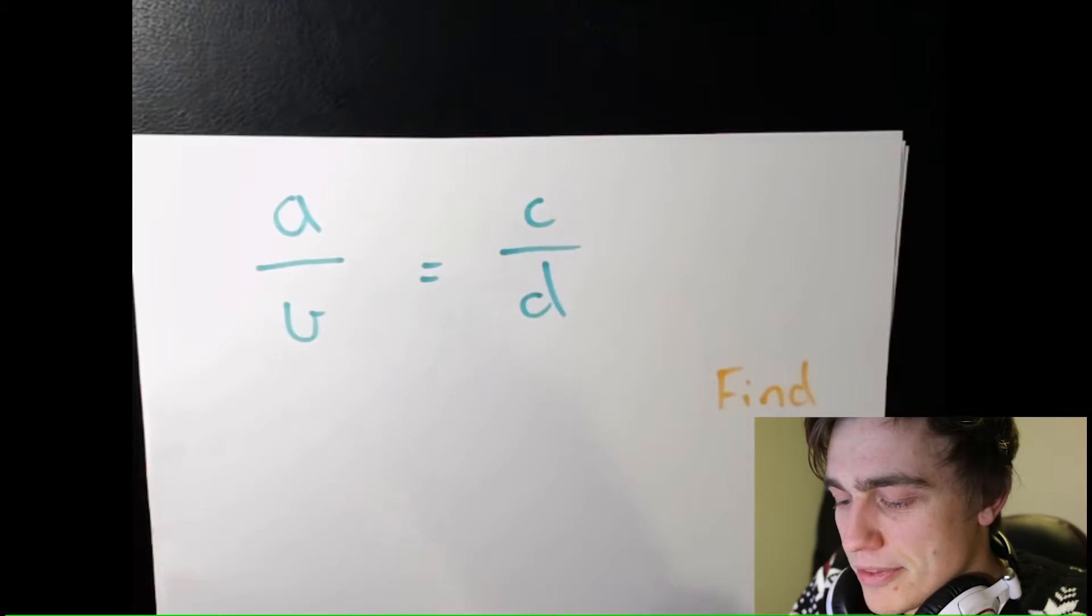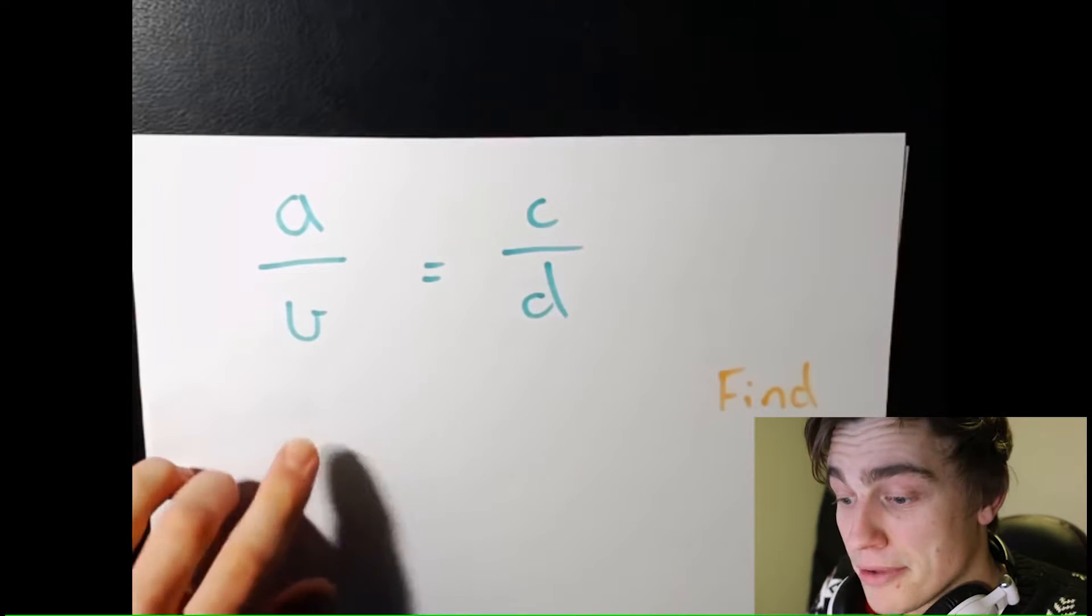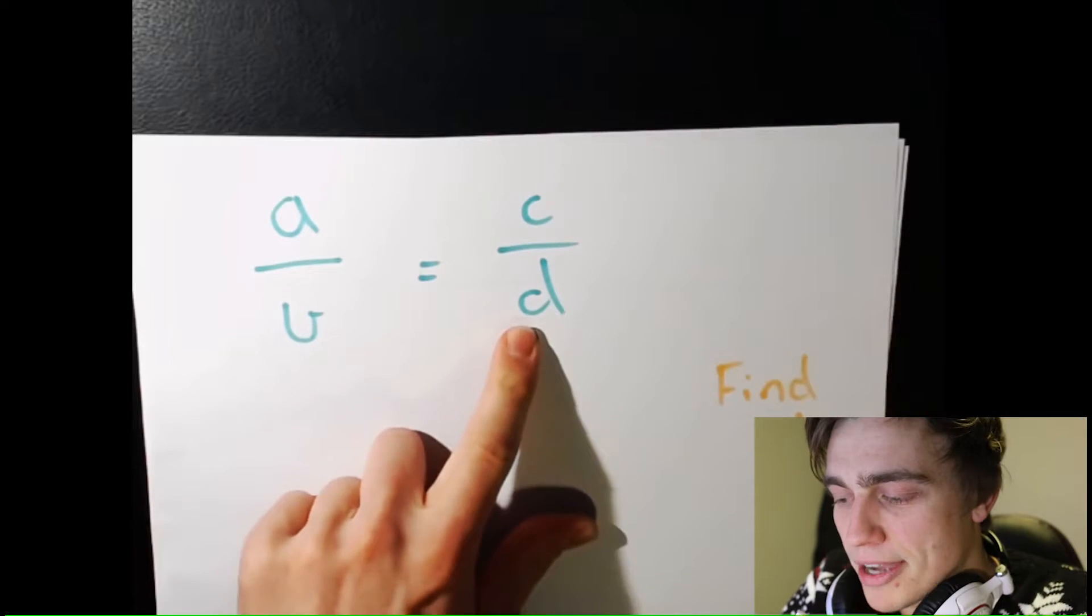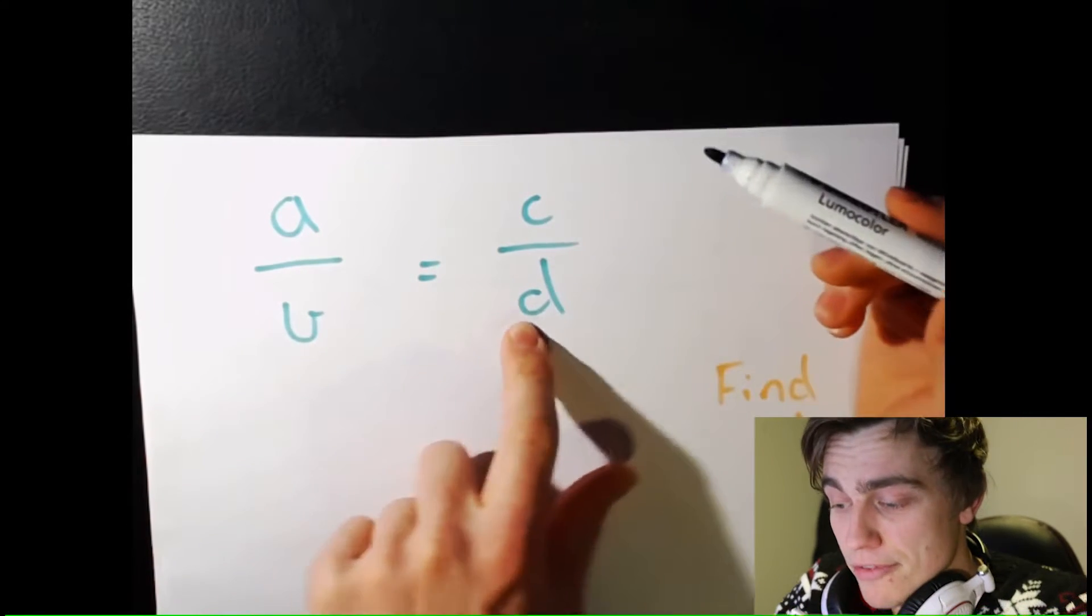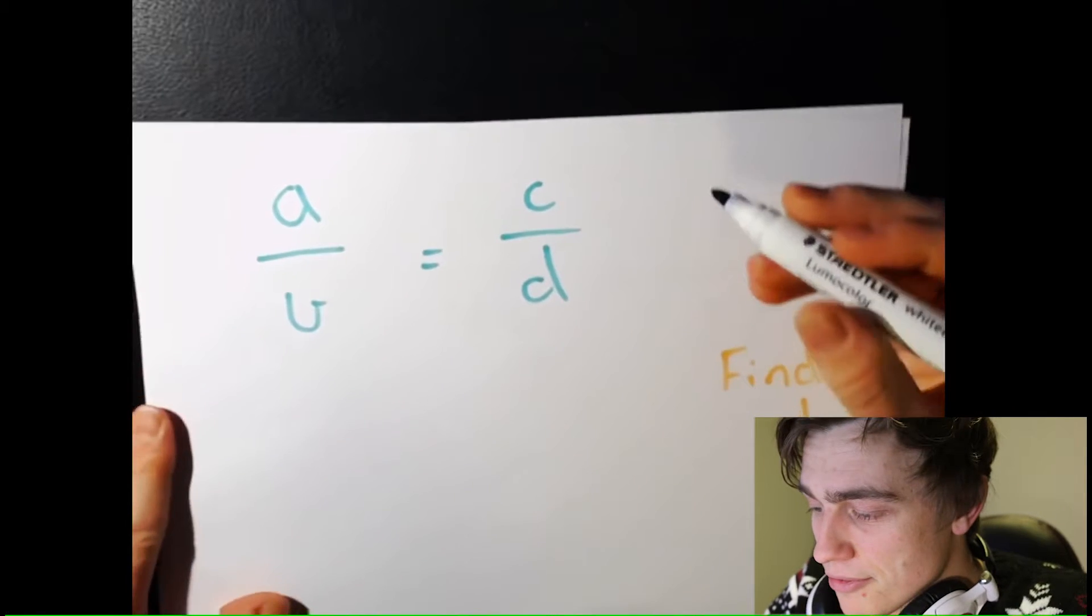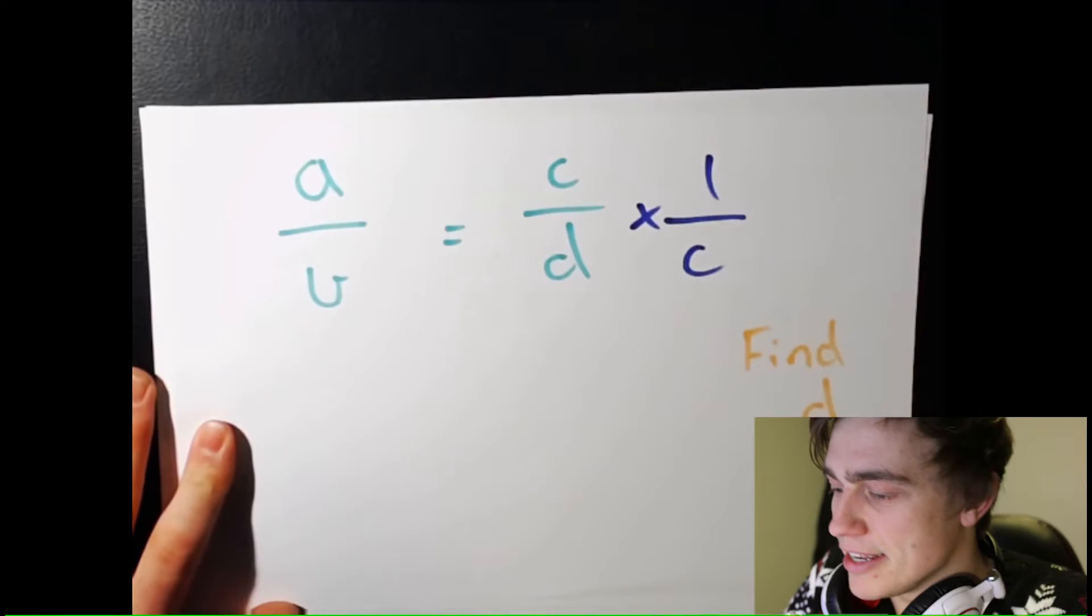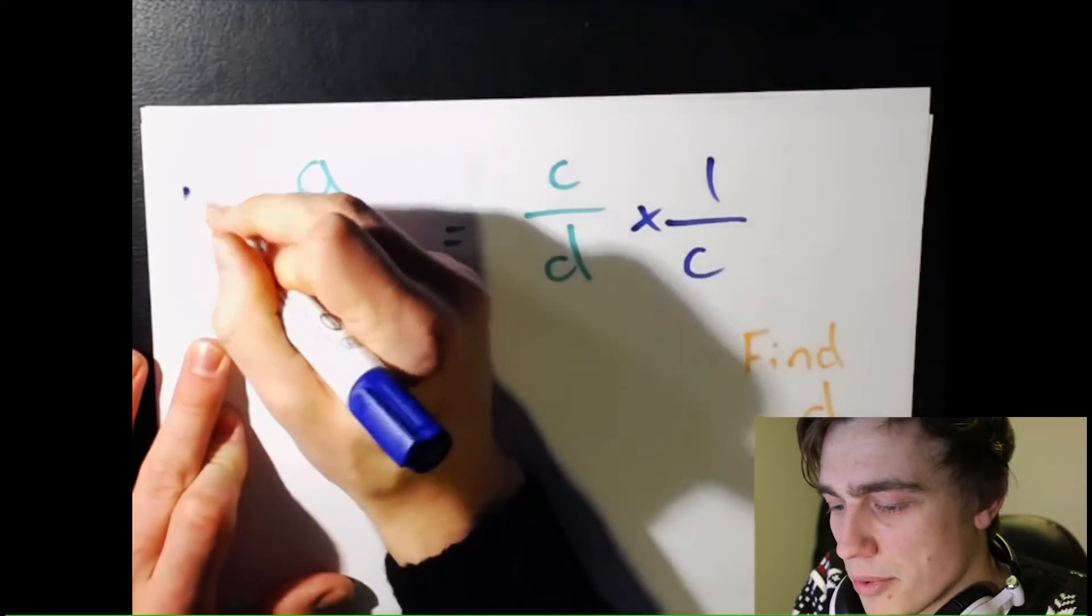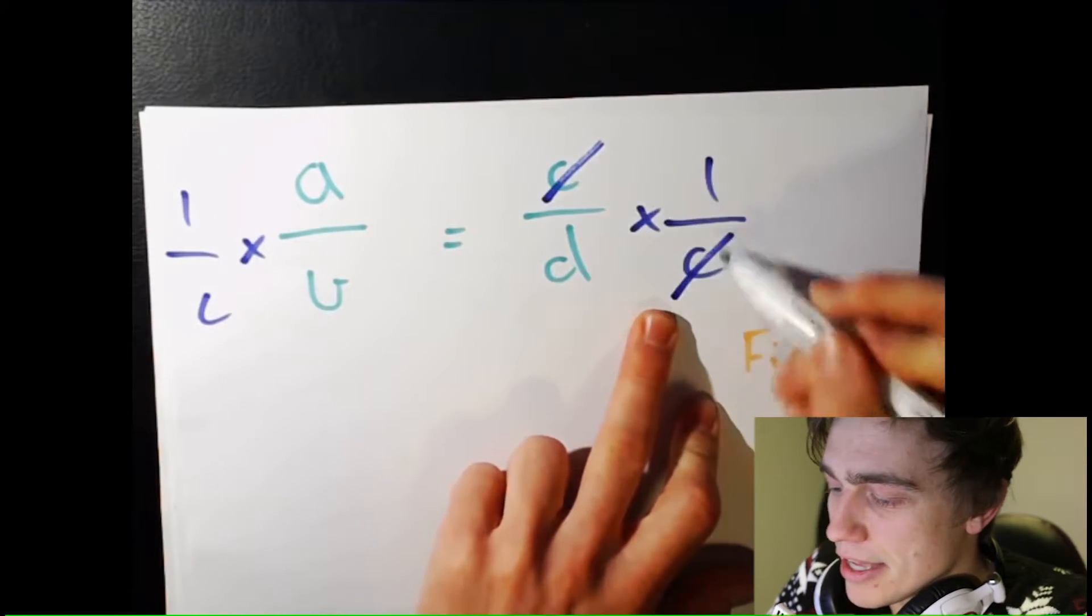D really quickly. Again, if you know this, just fast forward 30 seconds into my video. We get a little bit different this time. D. Gotta get D by itself. So all we have to do is get rid of the C over here. How do we do that? Easy. Again, we just put the C down the bottom. It's got to have that 1 over though. Do the same on the other side. 1 over C. C's now cancel.